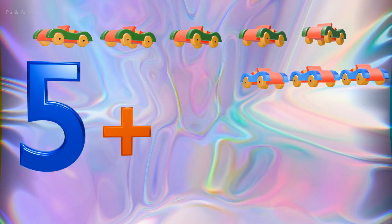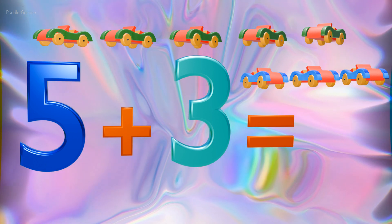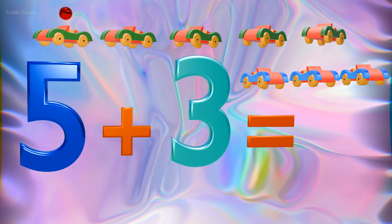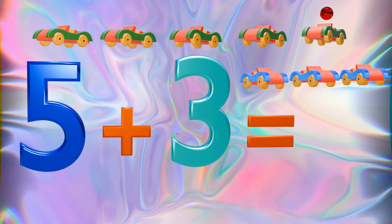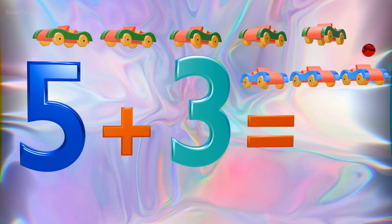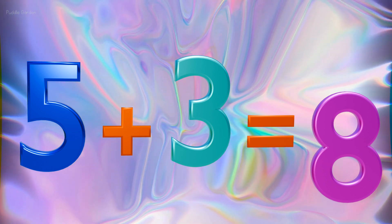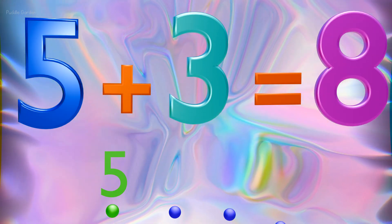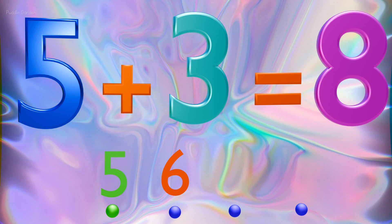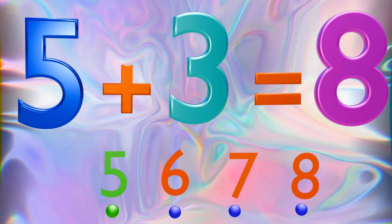If we have 5 and we add 3 more, that equals 1, 2, 3, 4, 5, 6, 7, 8 all together. 5 plus 3 equals 8, all together. Or if you have 5 and we're going to jump forward 3, we land on 8.